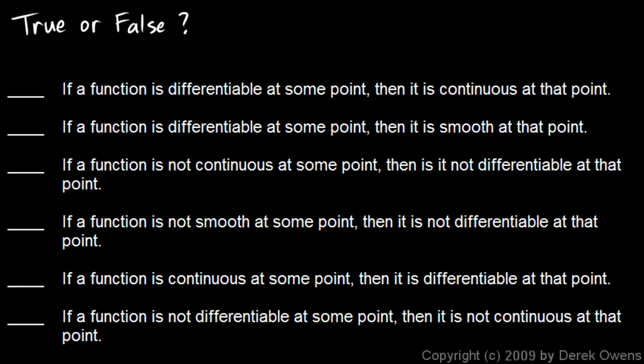With all of that in mind, we should be able to answer these true-false statements. First: if a function is differentiable at a point, then it is continuous at that point. That is true. In order to be differentiable, it has to be continuous — differentiability implies continuity. You could go further and say differentiability implies that the function is continuous and smooth at that point. Second: if a function is differentiable at some point, then it is smooth at that point. That is also true.